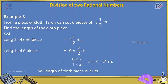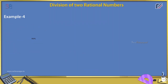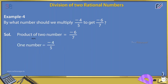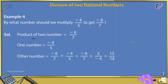So, the length of the cloth piece is 21 meters. Example 4: By what number should we multiply -4/5 to get -6/7? Solution: Product of two numbers = -6/7. One number = -4/5. Other number = -6/7 ÷ (-4/5) = -6/7 × 5/(-4) = 15/14. So, we multiply -4/5 by 15/14 to get -6/7.